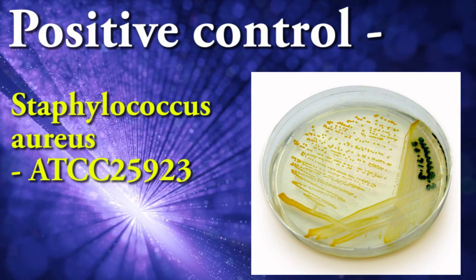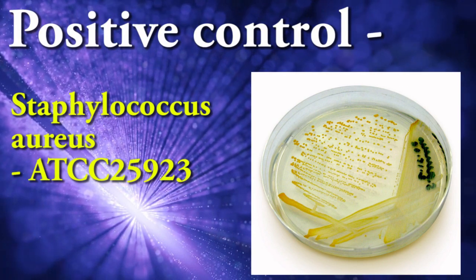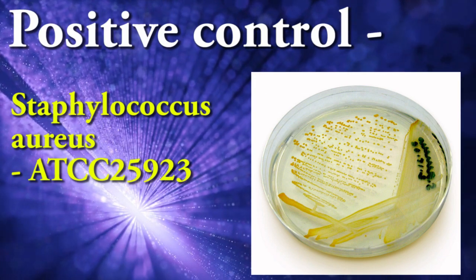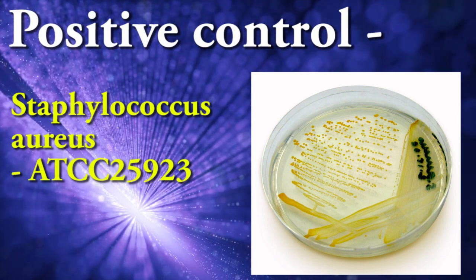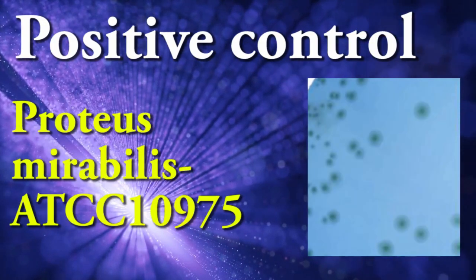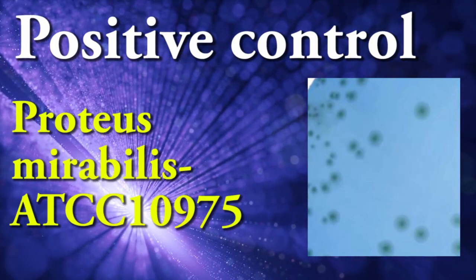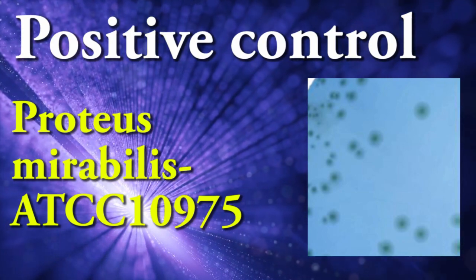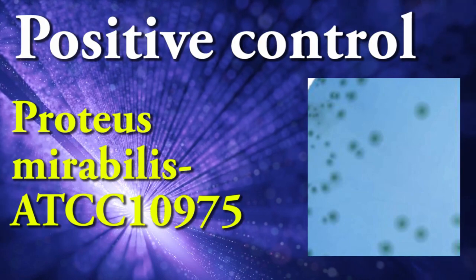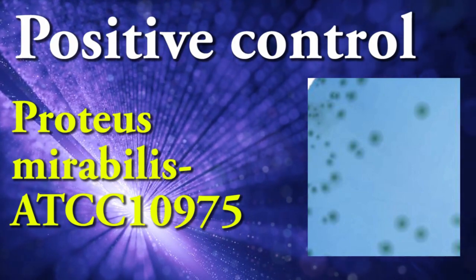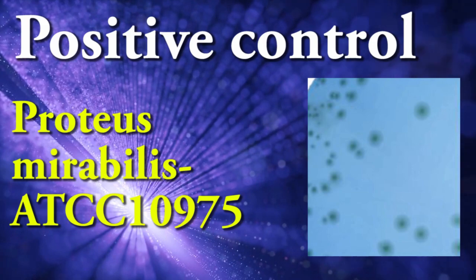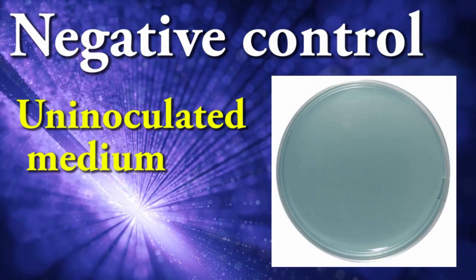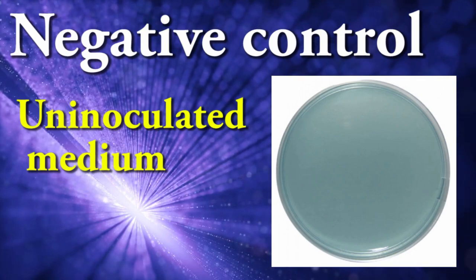Quality control: Positive control example — Staphylococcus aureus; expected results: good growth, yellow colonies. Positive control example — Proteus mirabilis; expected results: good growth, blue colonies, no swarming appearance. Negative control: uninoculated medium.